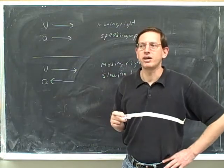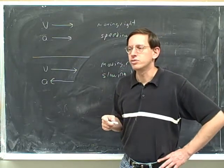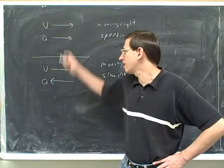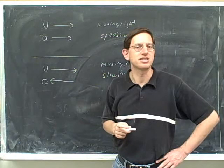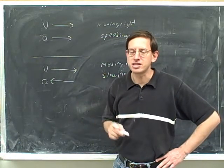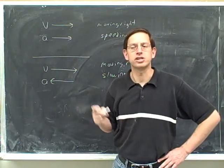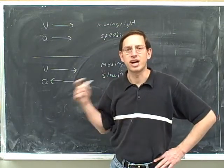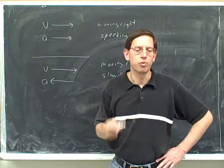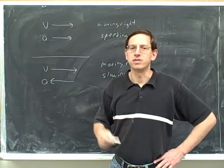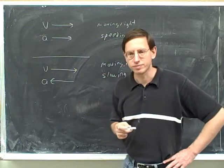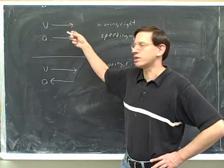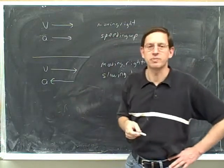Everything we're talking about here is strictly true just for one-dimensional motion. In two-dimensional motion, there's a more complicated relationship between velocity and acceleration. One thing that's always true in both one- and two-dimensional motion: the acceleration does not tell you which way you're moving — that's the velocity's job. It's the velocity that tells you which way you're moving.